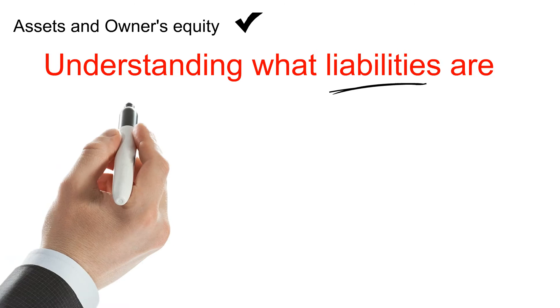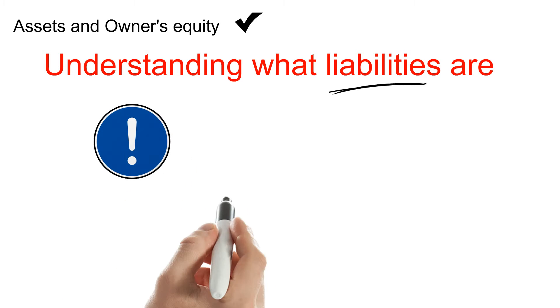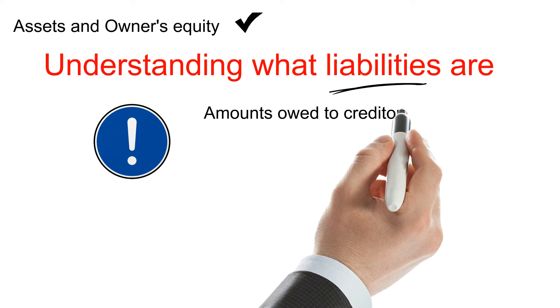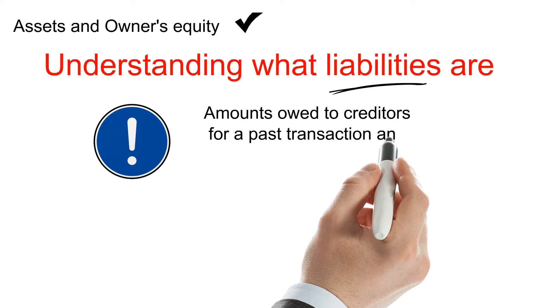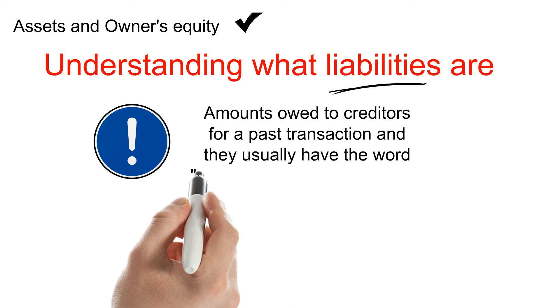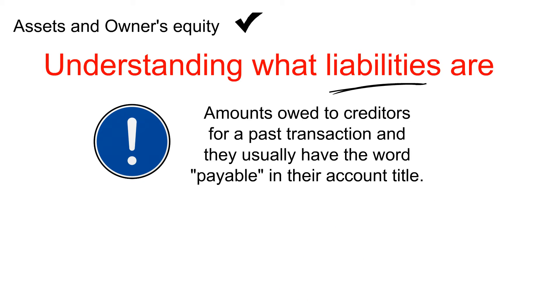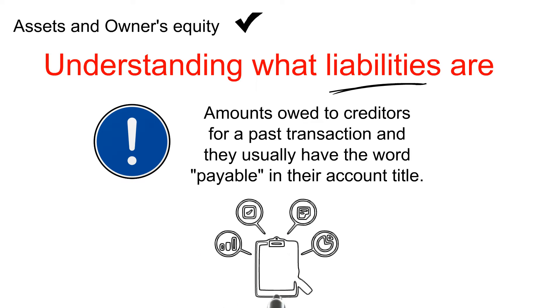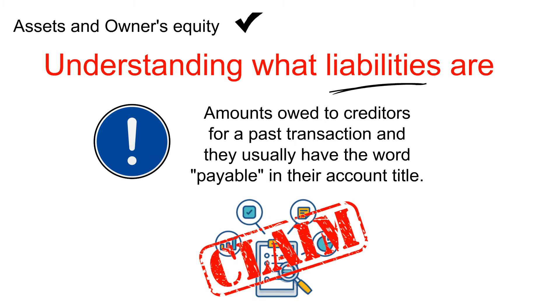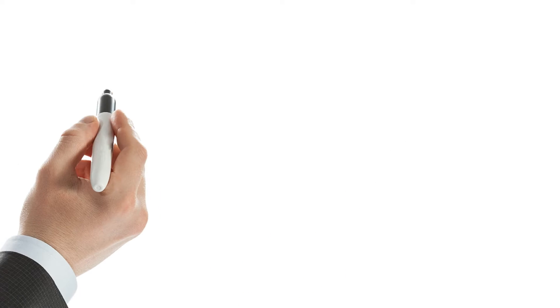Liabilities are obligations of the company. They are amounts owed to the creditors for a past transaction and they usually have the word 'payable' in the account title. Along with owner's equity, liabilities can be thought of as a source of the company's assets. They can also be thought of as a claim against a company's assets.